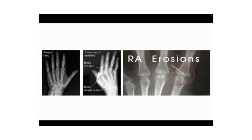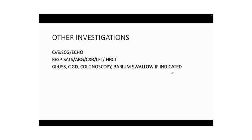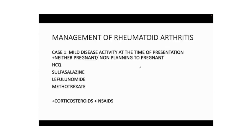Here is another X-ray demonstrating bony erosions and bone displacement — rheumatoid bony erosions. Other investigations include ECG, echocardiography for cardiovascular assessment, respiratory function tests, oxygen saturations, ABG, chest X-ray, LFTs, HRCT. For GI: ultrasound, OGD, colonoscopy if needed, and barium swallow if indicated.